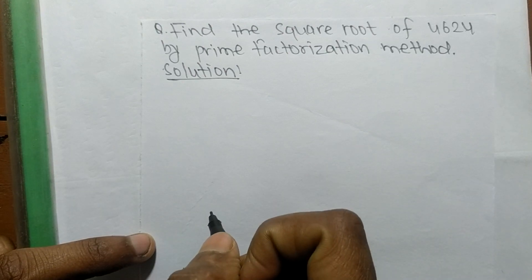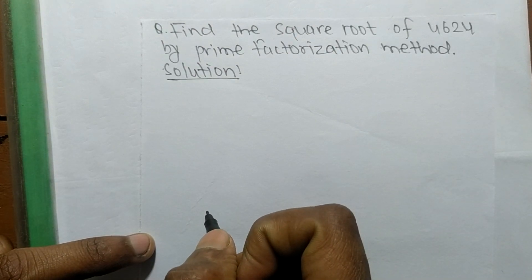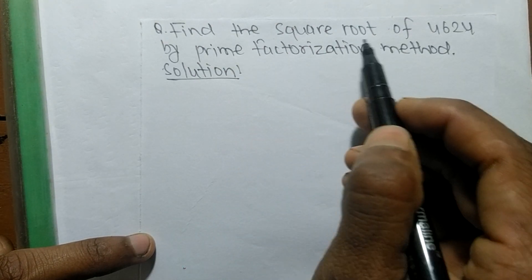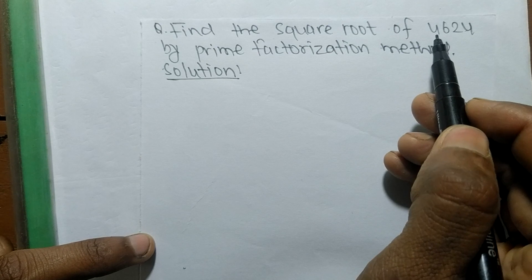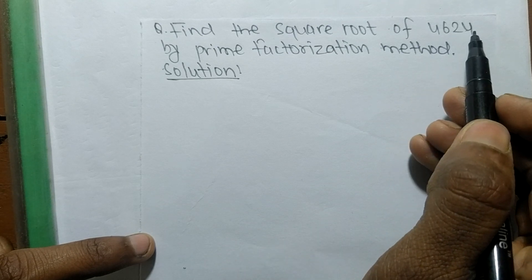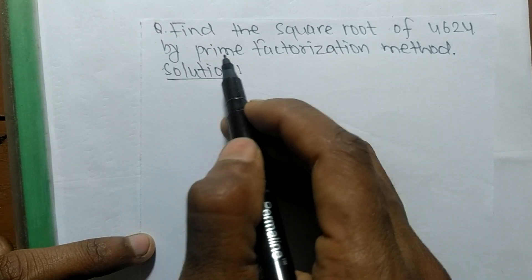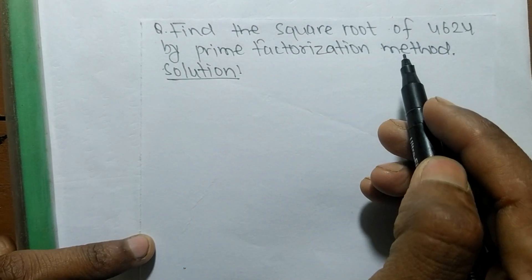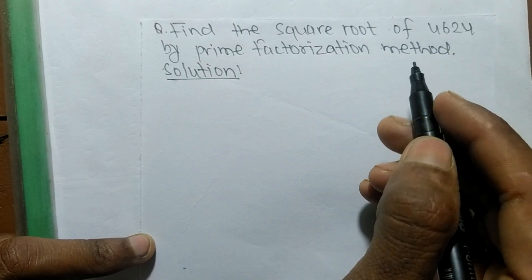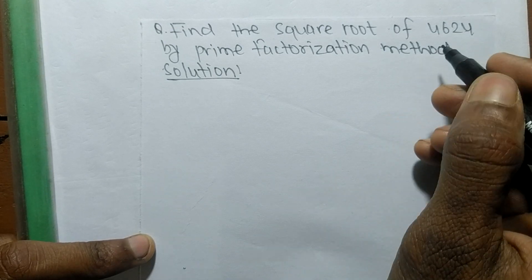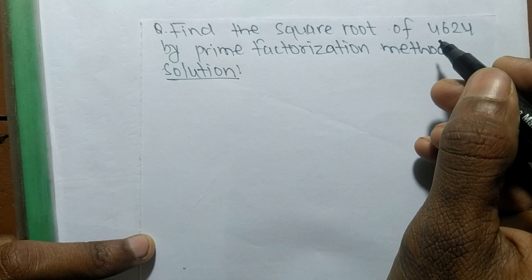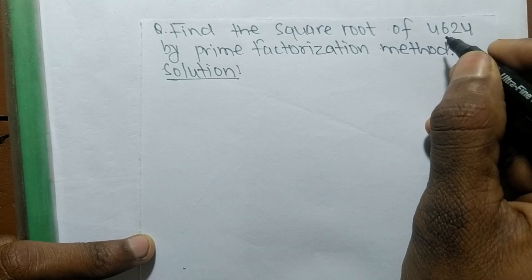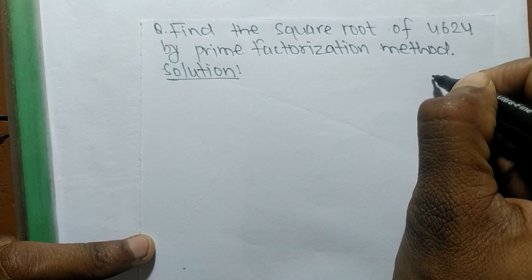Today in this video we shall learn to find the square root of 4624 by prime factorization method. So first of all, to find a square root, we have to find out the prime factors of 4624.